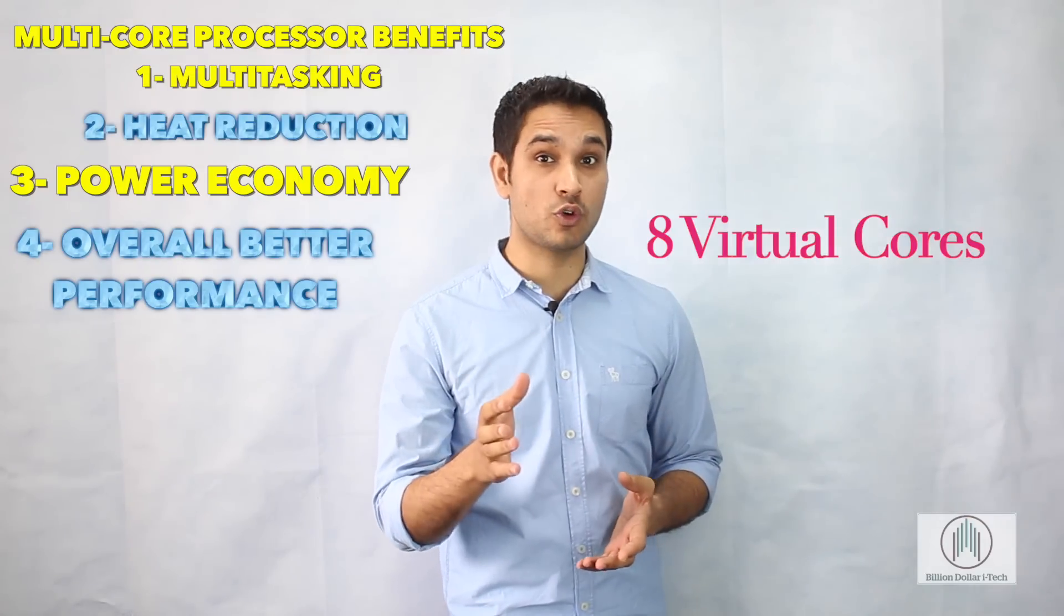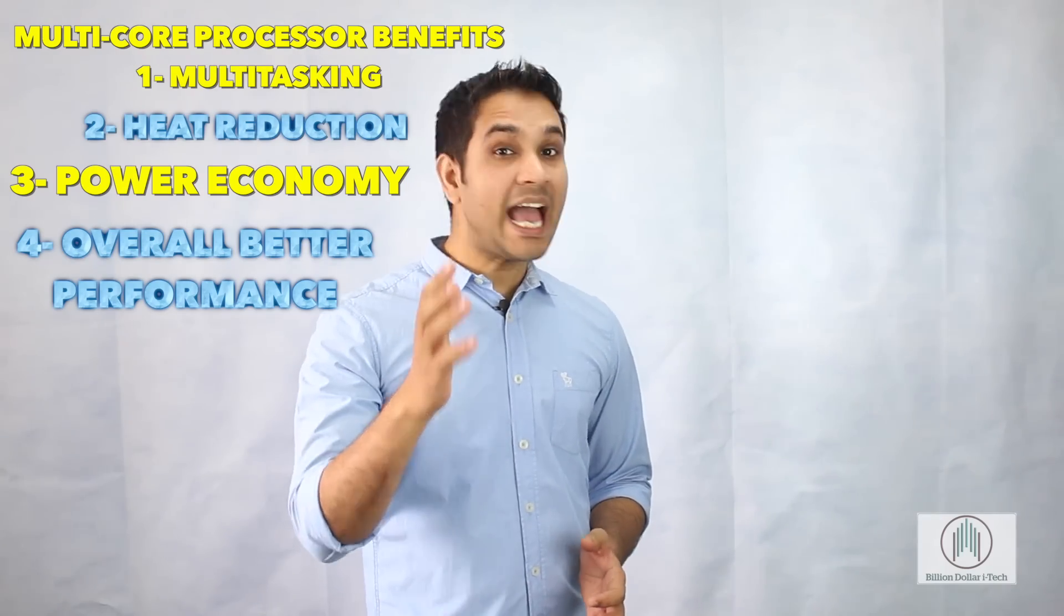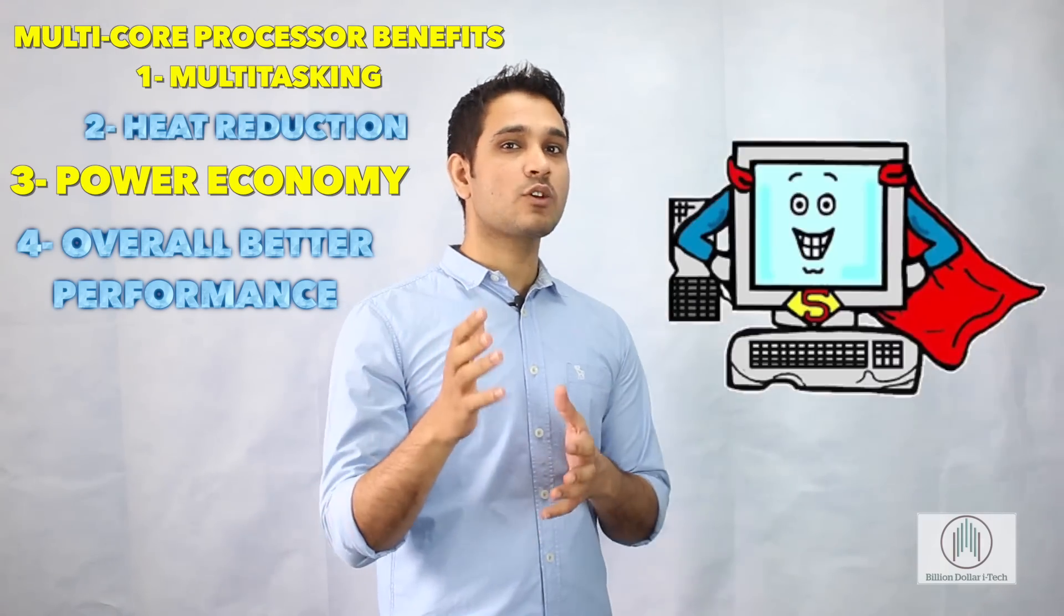The mighty Core i7 comes with 4 cores and hyper-threading which means 4 physical cores equals 8 virtual cores that can deal with the extreme workload which Intel could ever build. Core i7 also comes with turbo boost technology and the cache memory of Core i7 is also higher than Core i5.